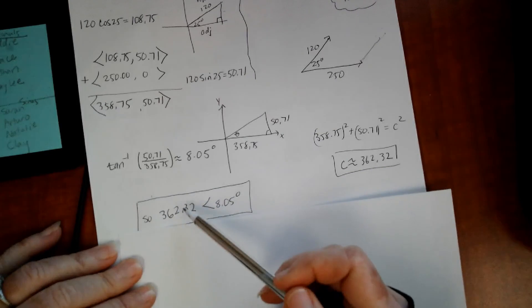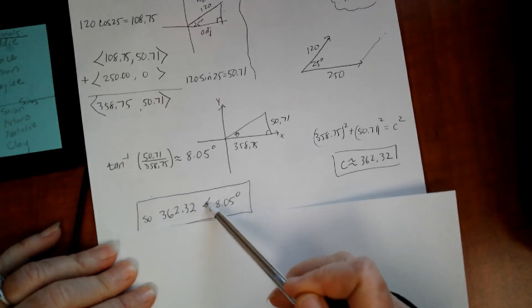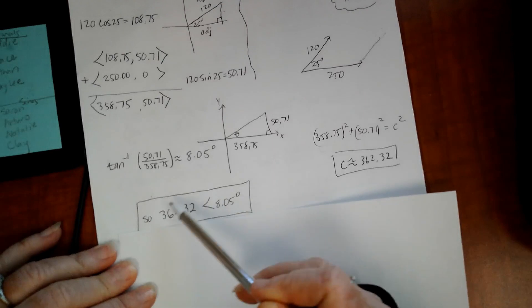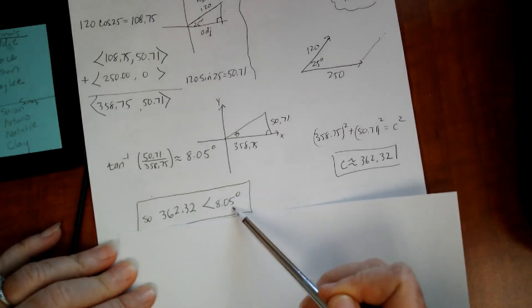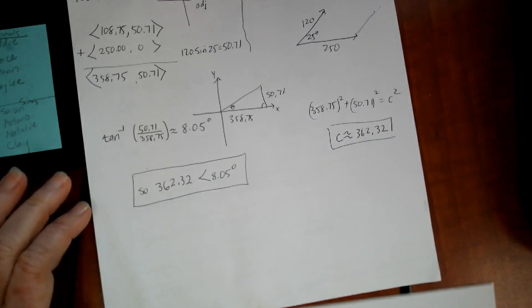And I got 8.05. If I want to write it all fancy, I can write the magnitude here, and then like a little angle measure, and then that's the direction. That's a way of writing this vector. You just write the magnitude and then the direction. So that was letter A.